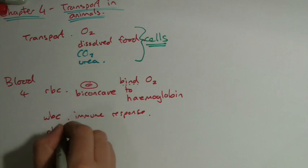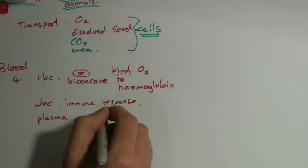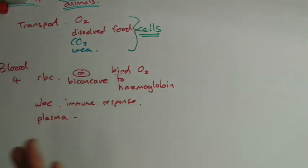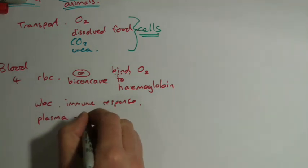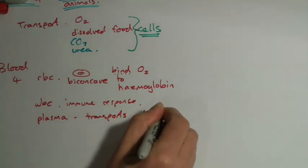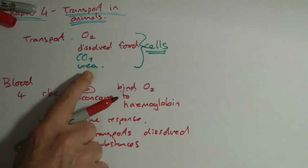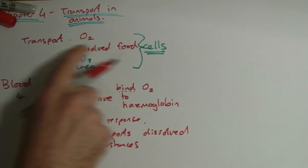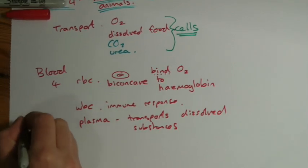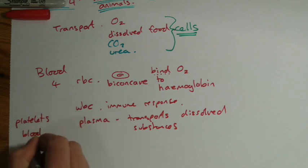Plasma is probably a difficult one to describe. Plasma is really the part in the blood that's the transport medium. It's the stuff that everything can move around in. So I would say it transports dissolved substances - we mentioned some of those at the top: carbon dioxide, urea, and dissolved food. Platelets are involved in blood clotting, preventing blood being lost and also preventing pathogens, disease-causing organisms, getting into your blood.